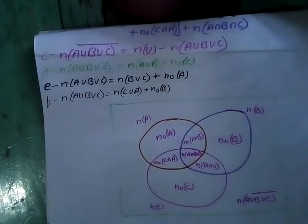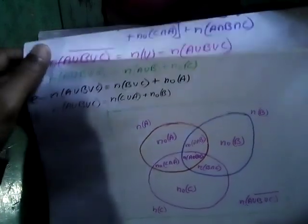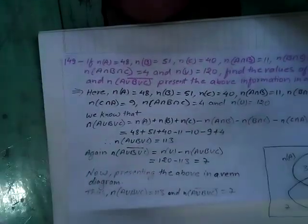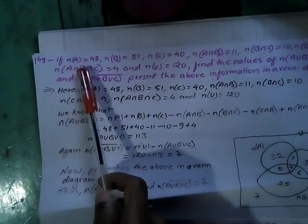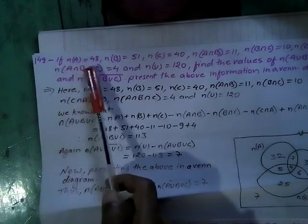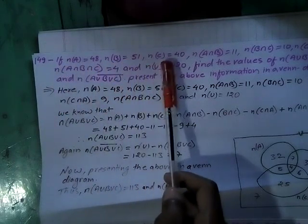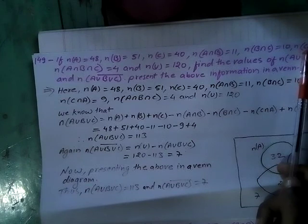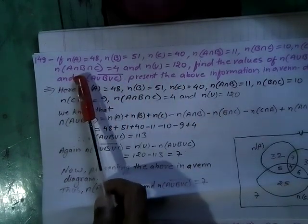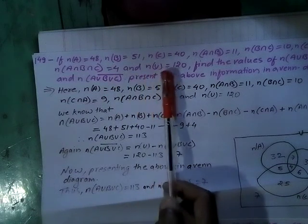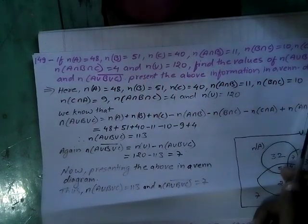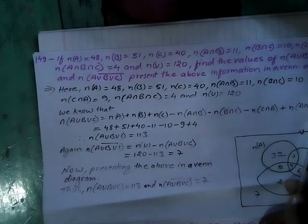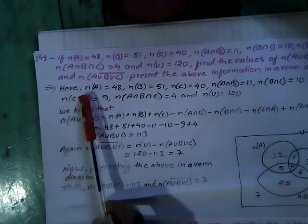All these formulas are used in lots of problems. Question number 149: If N(A) = 48, N(B) = 51, N(C) = 40, N(A∩B) = 11, N(B∩C) = 10, N(C∩A) = 9, N(A∩B∩C) = 4, and N(U) = 120, find the value of N(A∪B∪C) and N(A∪B∪C)' and present the information in a Venn diagram.